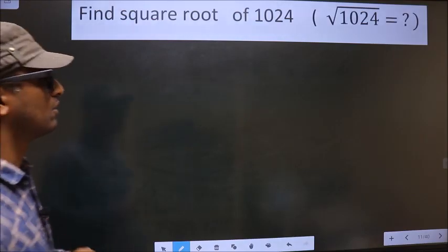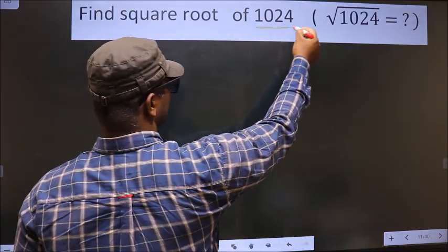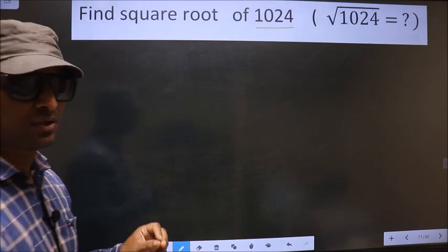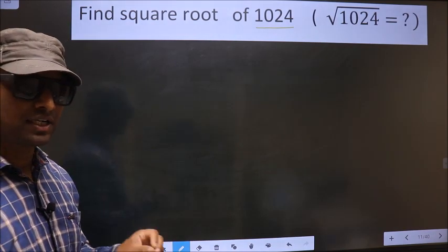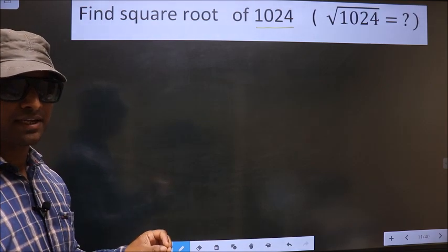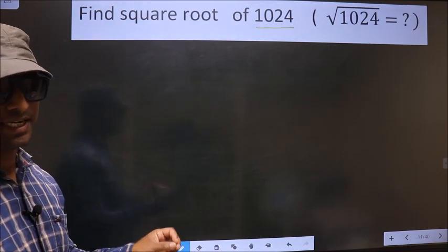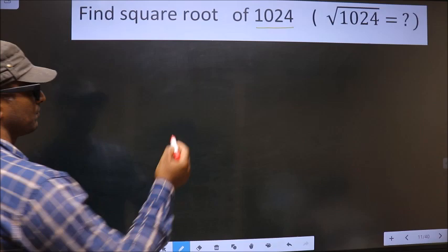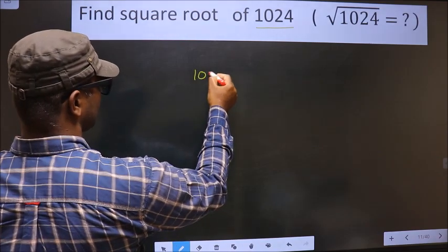Find square root of 1024. To find the square root by long division method, for that first we should frame it in this way, that is 1024.